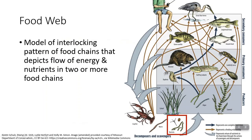A food web is just a bunch of food chains put together. Food webs are going to be more realistic than food chains because in general, organisms tend to eat more than one thing. There are some exceptions — for example, pandas tend to eat only bamboo, and koalas tend to eat only eucalyptus. However, for the most part, most organisms tend to have more than one food source.